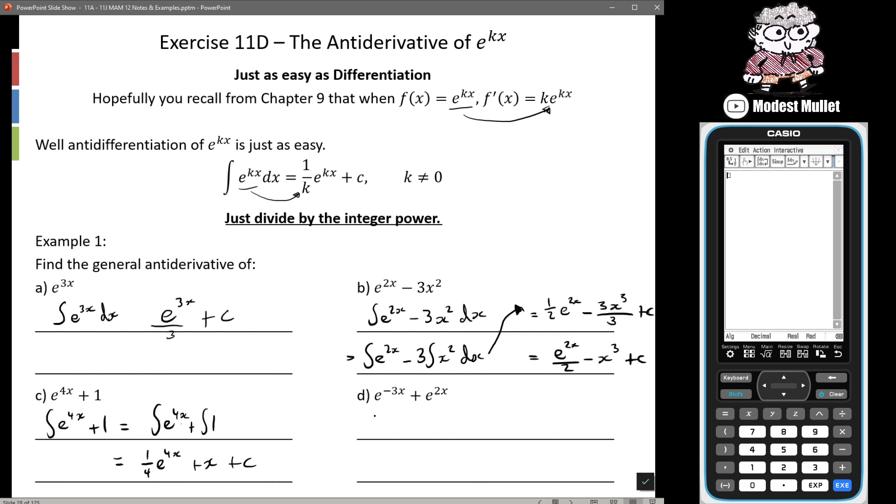And finally the anti-derivative of e to the negative 3x plus e to the 2x is equal to... and this time I won't put all the steps where we're breaking it all the way down but we're going to get negative 1/3 e to the 3x plus half e to the 2x plus c. So nice and easy.